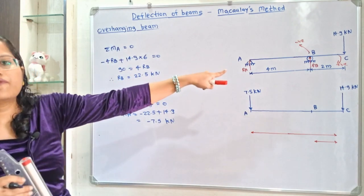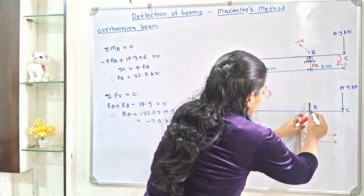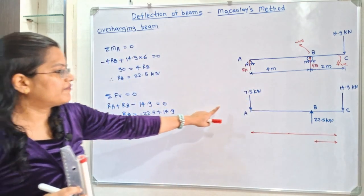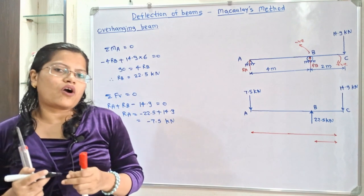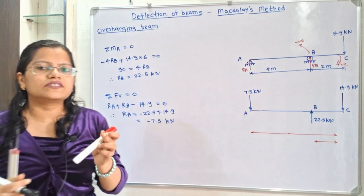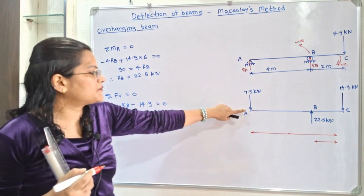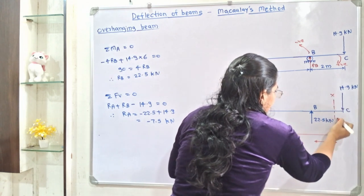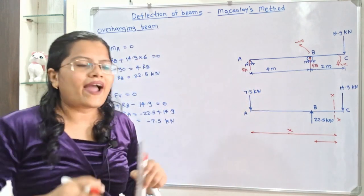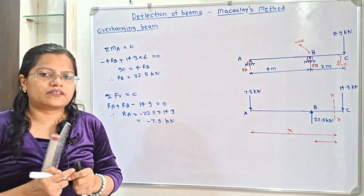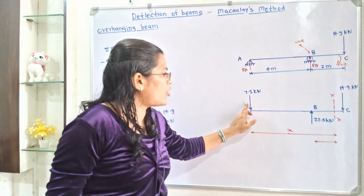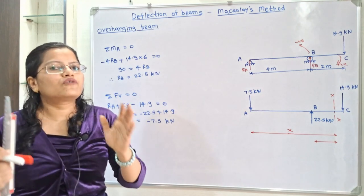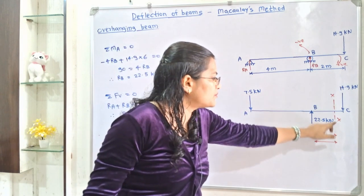RB is shown in the vertically upward direction with magnitude 22.5 kilonewton. This is the free body diagram. Now we have to apply Macaulay's method. In Macaulay's method, we consider a section XX at a distance x from end A. We then take the bending moment of all point loads about section XX, first finding the distances of these point loads from section XX.